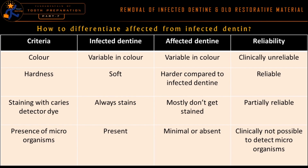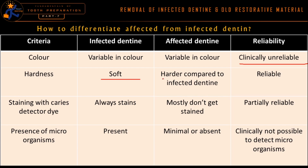How do we differentiate between infected and affected dentine? Looking at a comparison: first, color — infected dentine is variable but usually brown; affected dentine is also variable, sometimes pale or brownish. Clinically, color can never be used as a reliable technique. Second, hardness — infected dentine will be soft, while affected dentine will be harder, though less hard than sound dentine. Clinically, hardness is a reliable way to differentiate between infected and affected dentine.